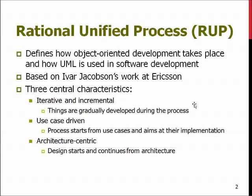There are three central characteristics in the Rational Unified Process. First of all, it's iterative and incremental, meaning that we start with a high abstraction design and gradually develop our product towards a more mature system, adding new versions and more refined versions of different components and parts until we are satisfied with the product and can have the system tested, validated, verified and delivered.